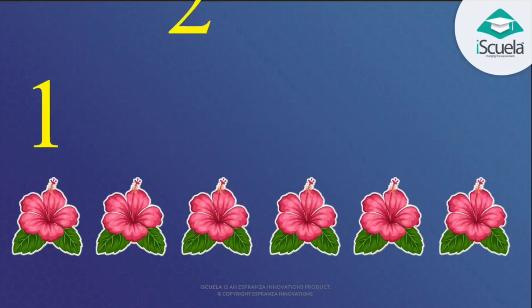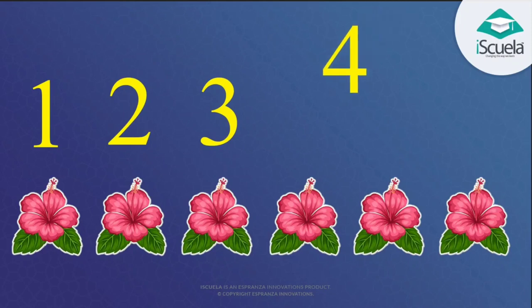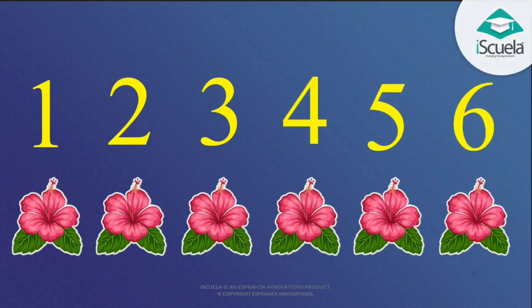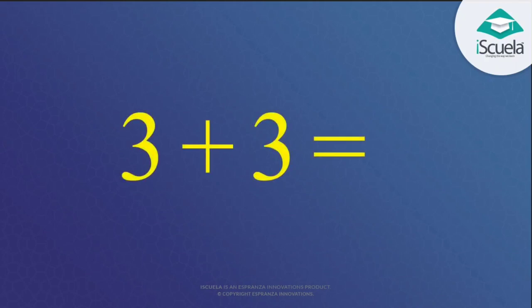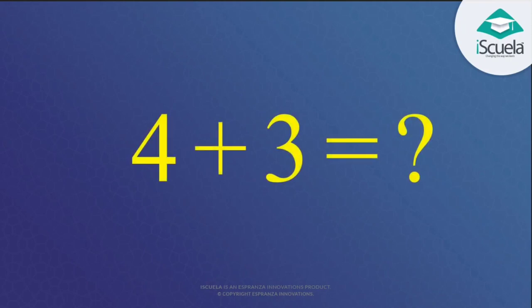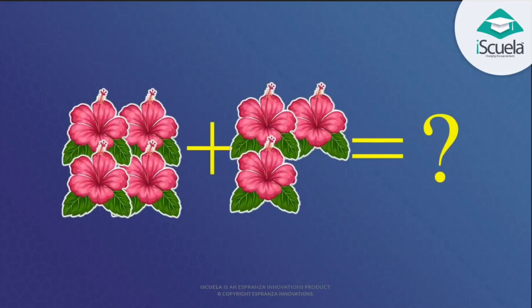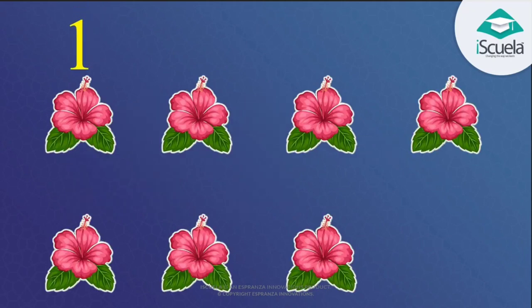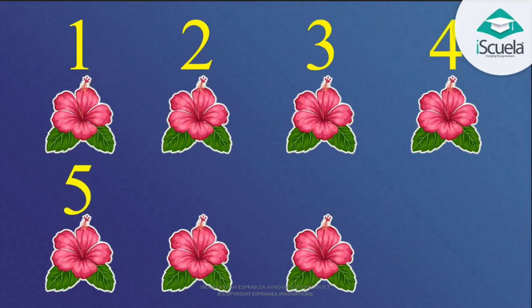Now look at this sum: 3 plus 3 is equal to what? 3 plus 3 — just start counting: 1, 2, 3, 4, 5, 6. Good! So 3 plus 3 is equal to 6. Good job! Next: 4 plus 3 is equal to what? 4 plus 3 — count: 1, 2, 3, 4, 5, 6, 7. Good!